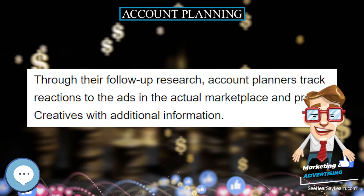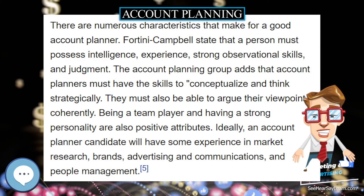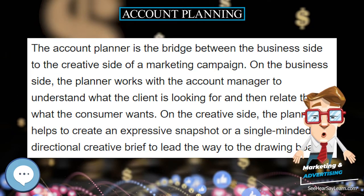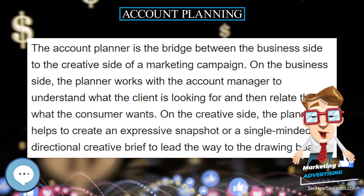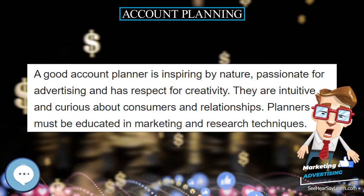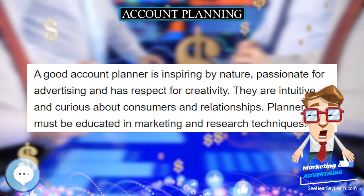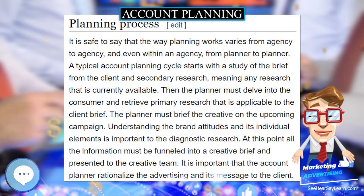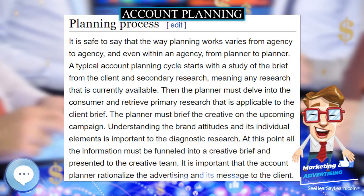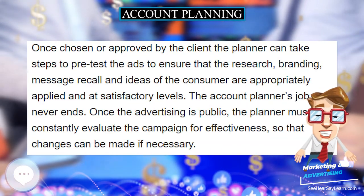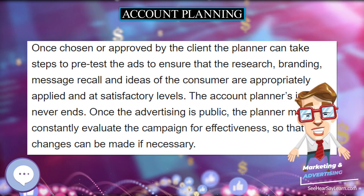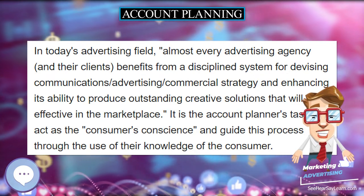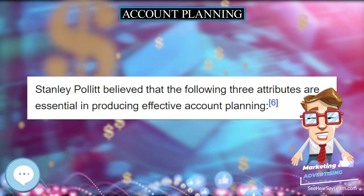The way planning works varies from agency to agency and even within an agency from planner to planner. A typical account planning cycle starts with a study of the brief from the client and secondary research — meaning any research that is currently available. Then the planner must delve into primary research applicable to the client brief and brief the creative on the upcoming campaign. Understanding the brand, its attitudes, and its individual elements is important to the diagnostic research. At this point, all the information must be funneled into a creative brief and presented to the creative team.